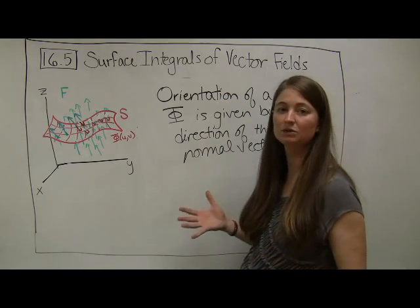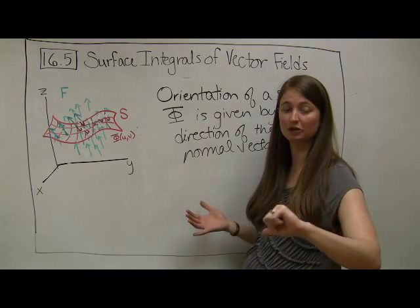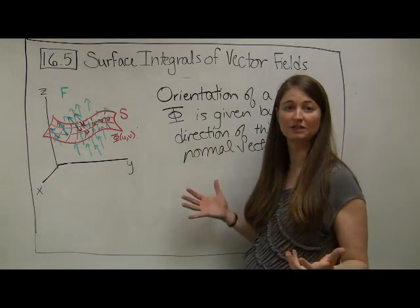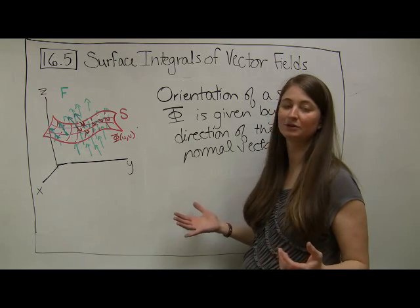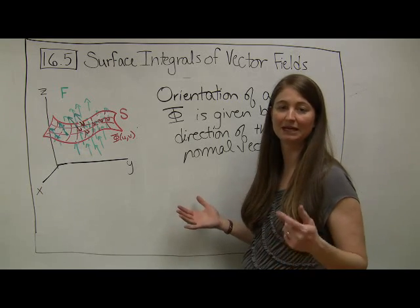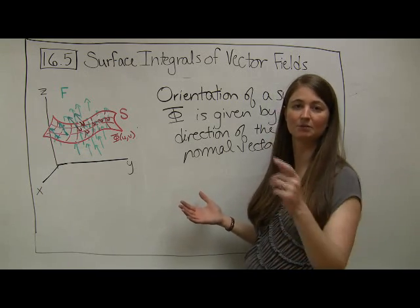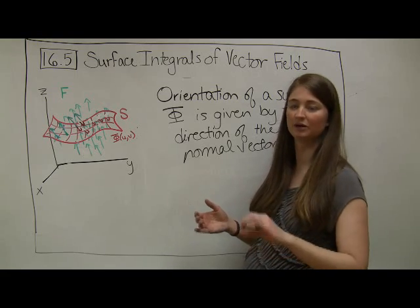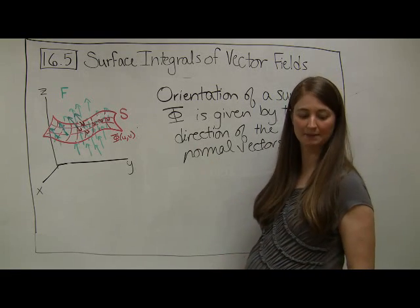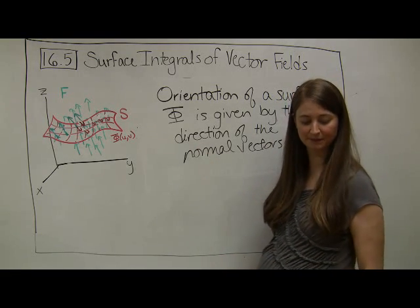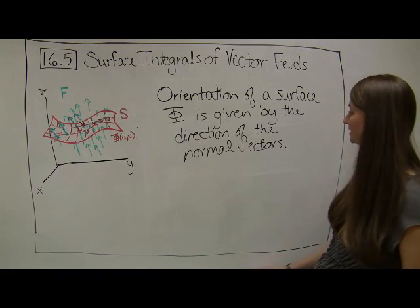In general, if you compute a normal vector and feel like it's pointing the wrong direction for the physics of the situation, you can always flip it by multiplying each of the components by negative one — that will just flip your normal vector in the opposite direction. That's a minor point to keep in mind.